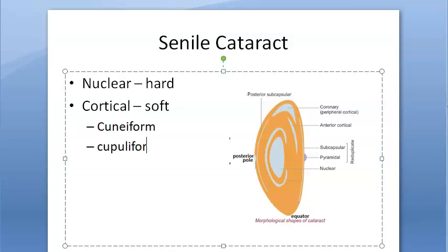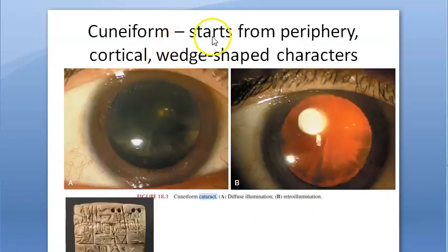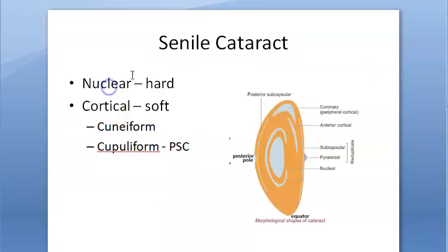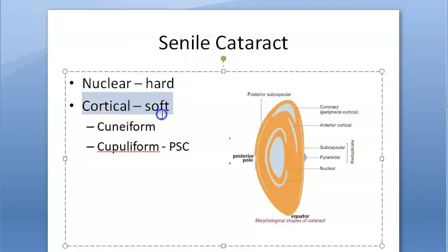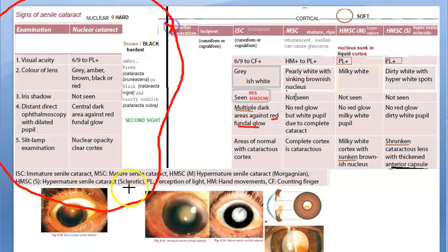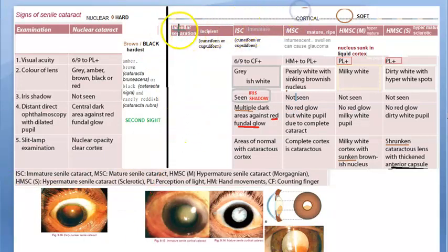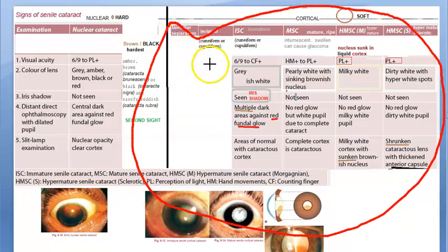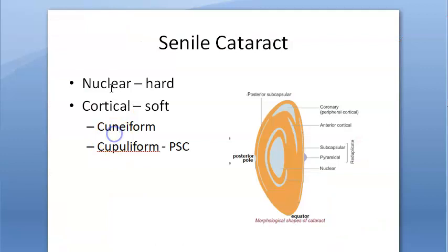In cortical cataract, the more common subtypes are cuneiform and cupuliform. Cupuliform is like a posterior subcapsular cataract — just remember 'cup.' Cuneiform means wedge-shaped and starts from the periphery. So under senile cataract: nuclear (hard) and cortical (soft), with cuneiform and cupuliform subtypes. Cortical cataract stages include lamellar separation, incipient, immature, mature, and hypermature — with morgagnian and sclerotic under hypermature.